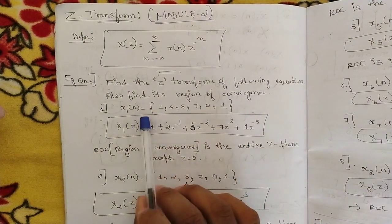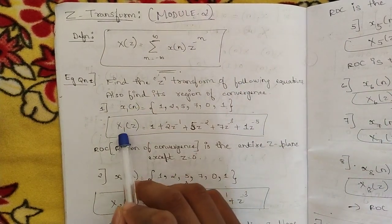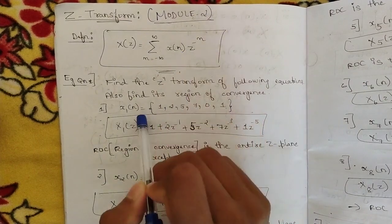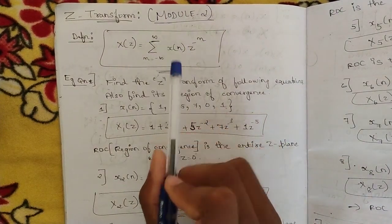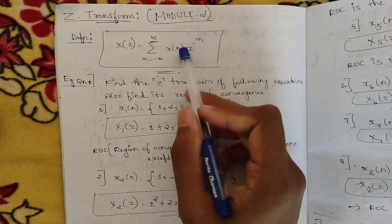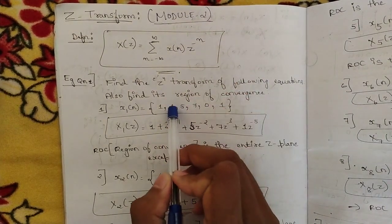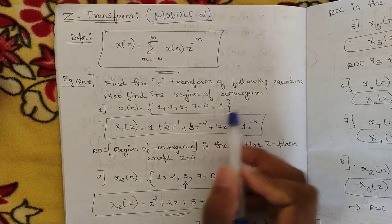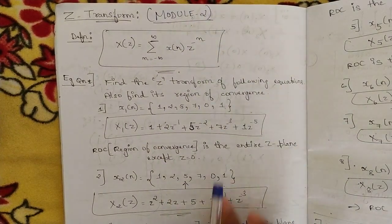The first sequence is x1(n) = {1, 2, 5, 7, 0, 1}. To convert to Z domain, apply the Z transform formula. x(0) = 1 gives 1 times Z to the power minus 0, which equals 1. Then plus 2 times Z to the power minus 1, plus 5 Z to the power minus 2, plus 7 Z to the power minus 3. The 0 term is neglected since 0 times anything is 0, and finally plus 1 times Z to the power minus 5.